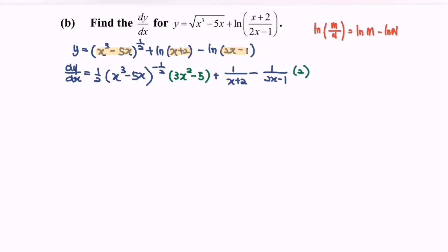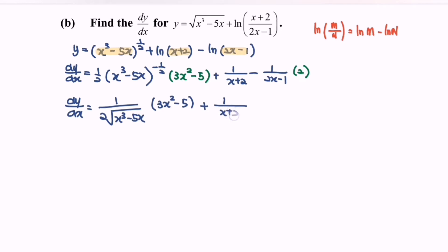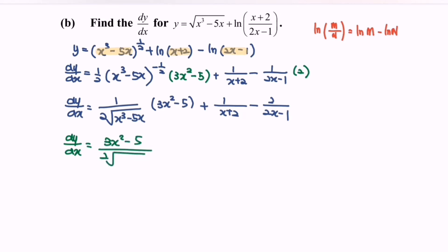Rewrite the situation. So dy/dx equals 1 over 2, times the square root of x cubed minus 5x, multiplied with 3x squared minus 5. Plus 1 over x plus 2, minus 2 over 2x minus 1. So finally, dy/dx equals 3x squared minus 5, over 2 times the square root of x cubed minus 5x, plus 1 over x plus 2, minus 2 over 2x minus 1.